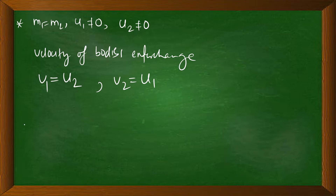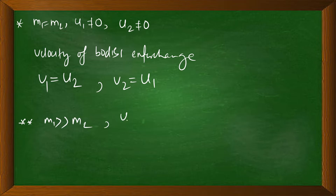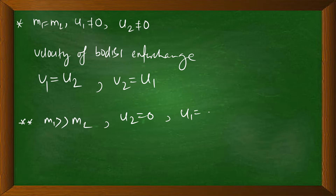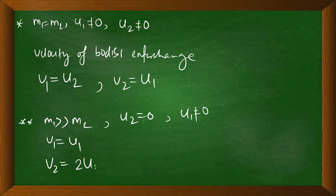The second case: M1 is greater than M2, and M2 is at rest. In this case, the truck hits the cycle. The truck continues — its final velocity V1 is approximately U1 — and the cycle moves forward with velocity V2, which is small because M2 is much smaller. The final velocity of the truck remains approximately U1.